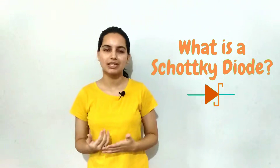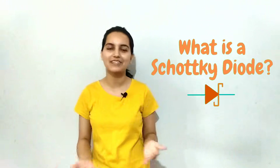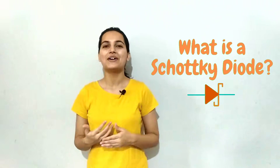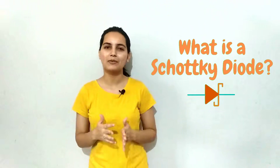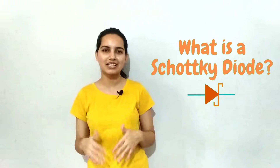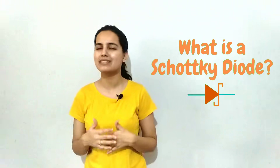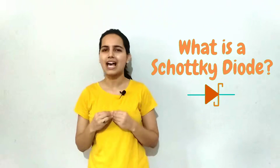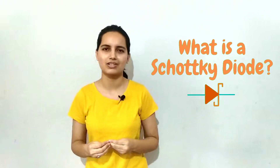We all know about the PN junction diode — we have seen all the videos about it. The performance parameters of the Schottky diode are way better than the PN junction diode, but its behavior is the same as the PN junction diode. So in any circuit where you would use a PN junction diode, it is better to go for the Schottky diode instead.